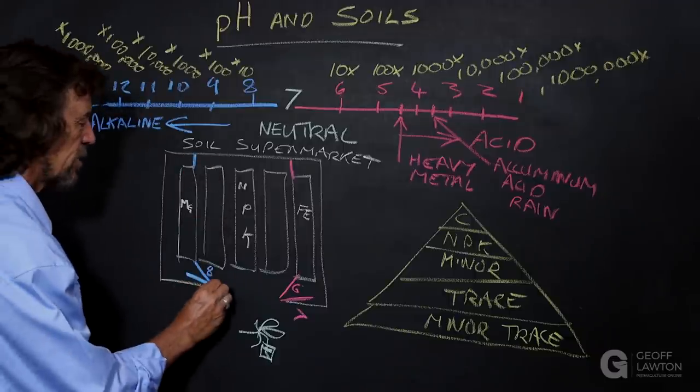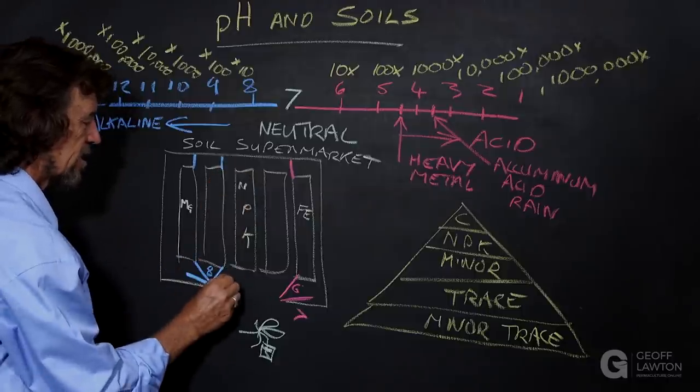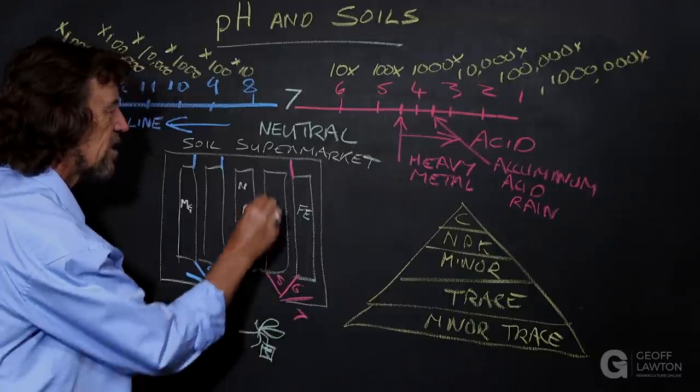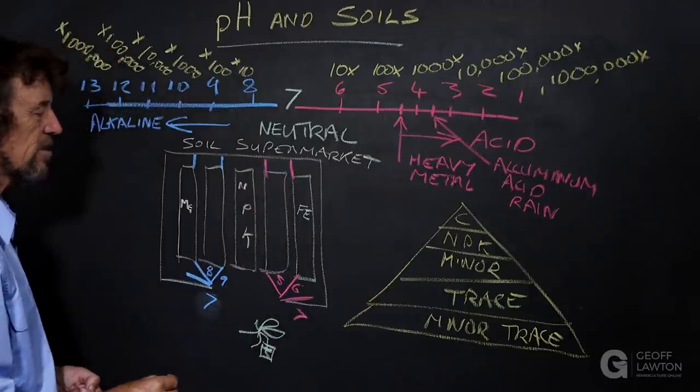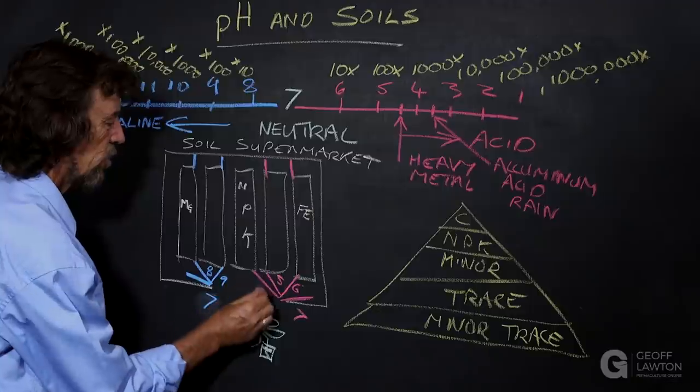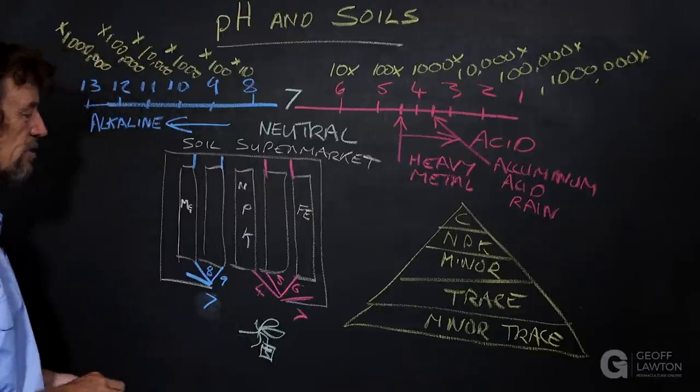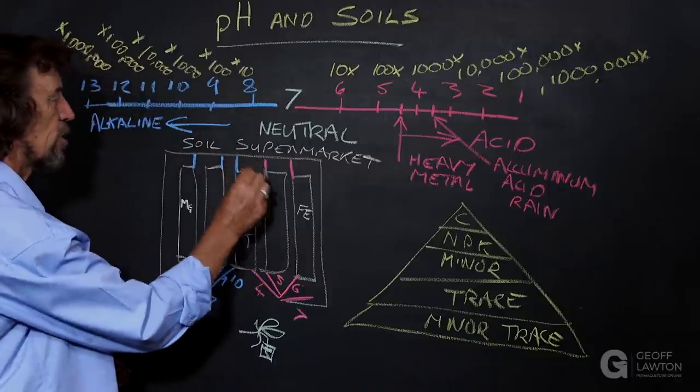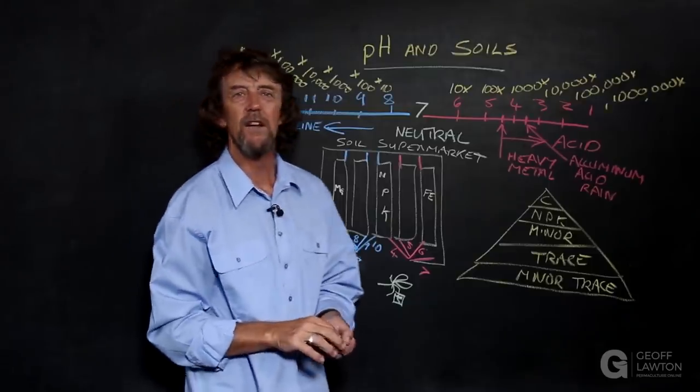And if it goes to pH 9, this aisle closes. And if it goes to pH 5, this aisle closes. And at pH 4, half the shop's closed. And at pH 10, the other half of the shop is closed. So we can close half the shop.